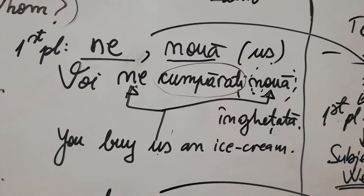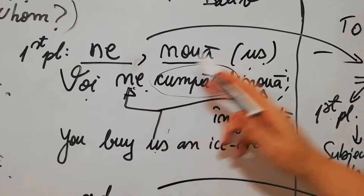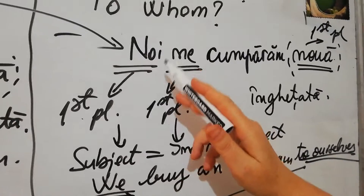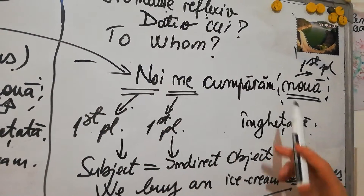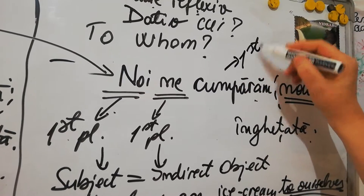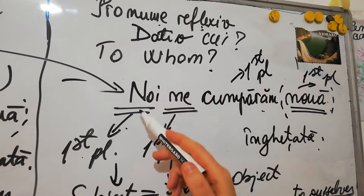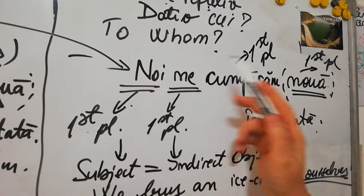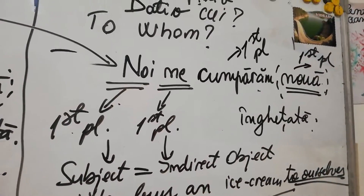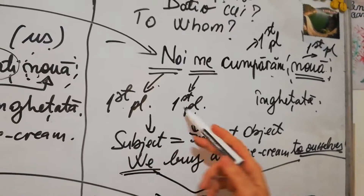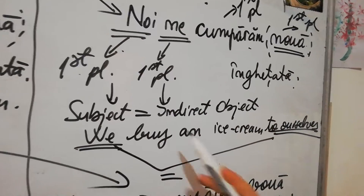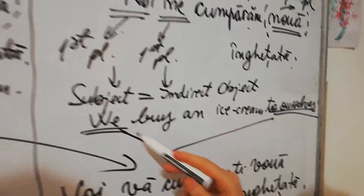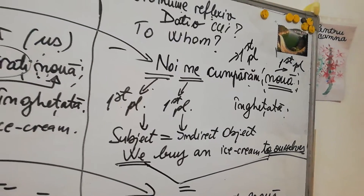What if the subject is the same as 'us'? Then the subject is 'noi'. 'Noi ne cumpărăm nouă înghețată' - 'nouă' is not mandatory. First person plural, first person plural, first person plural - the verb is also conjugated in first person plural because it's the subject. Subject equals indirect object - they are identical. We buy an ice cream to ourselves.